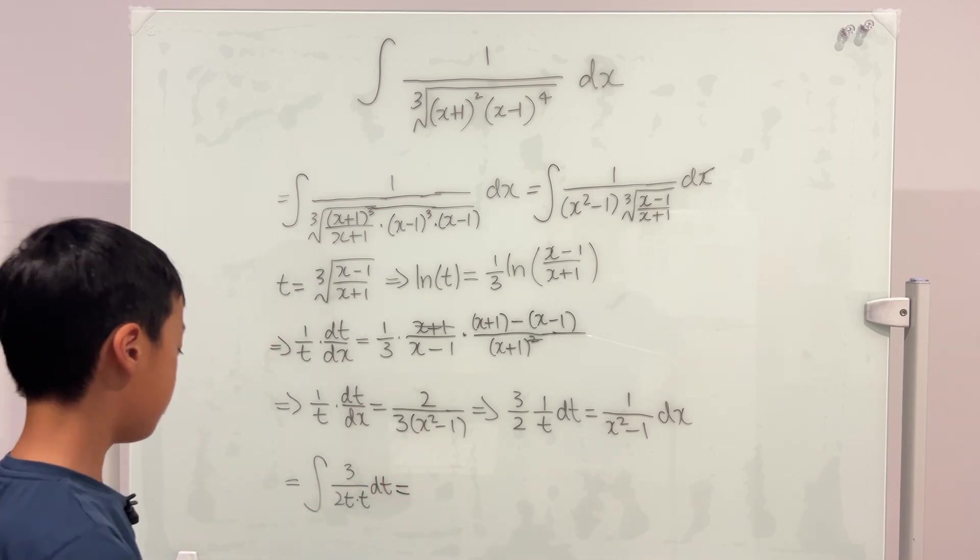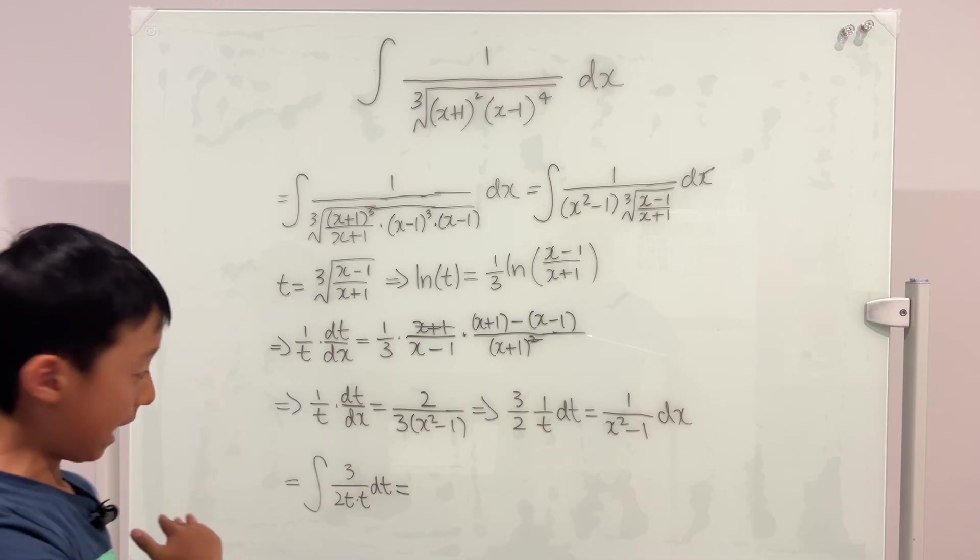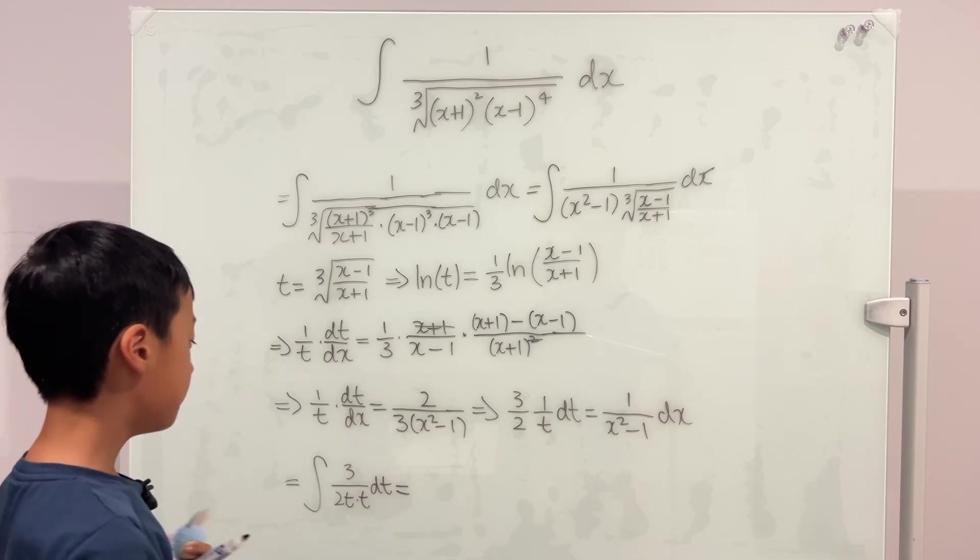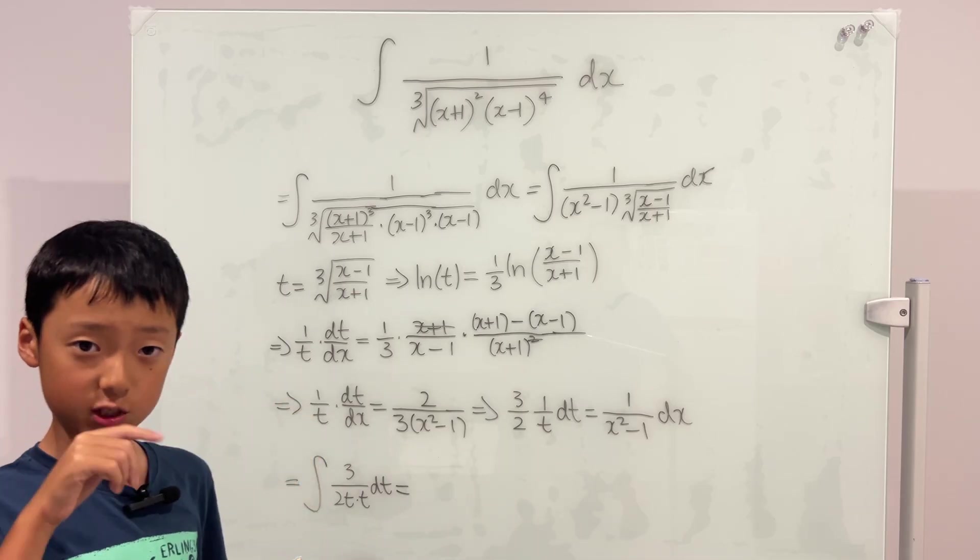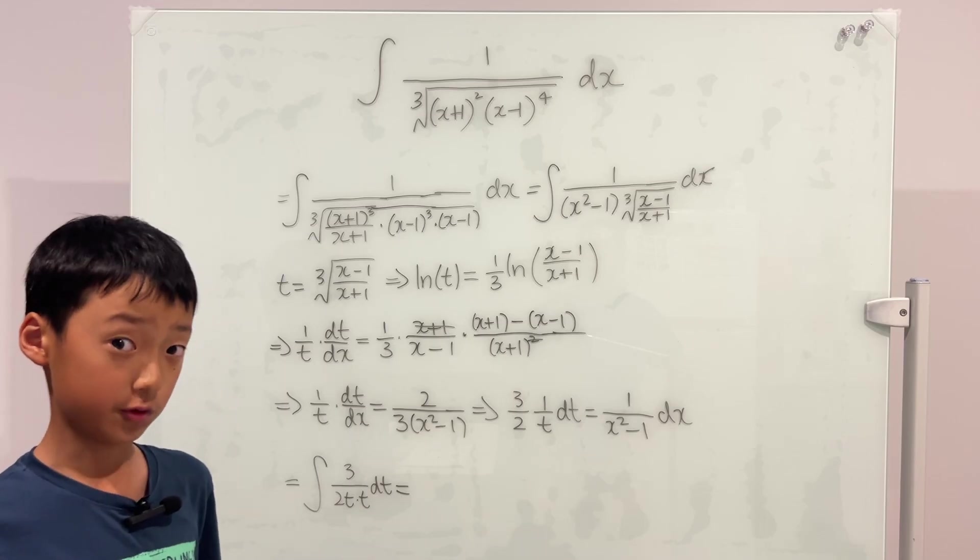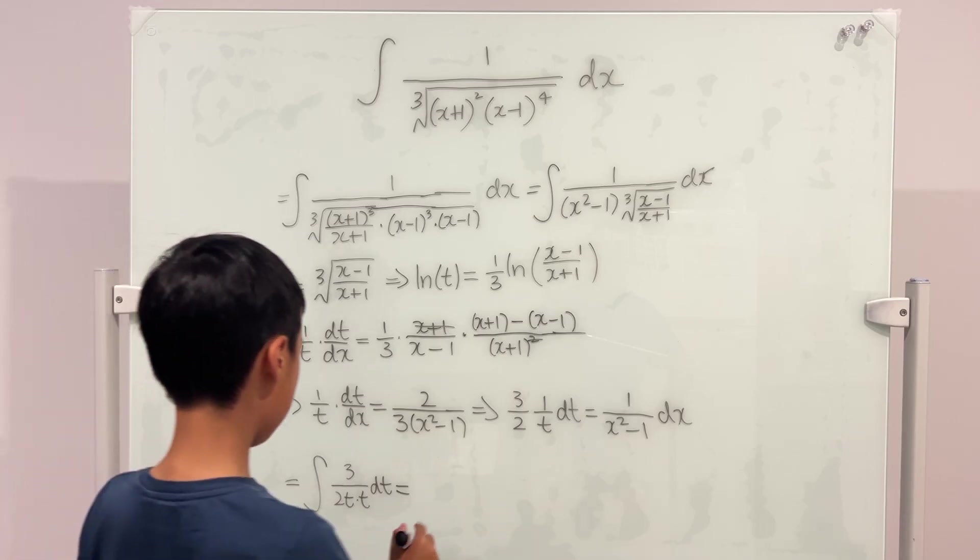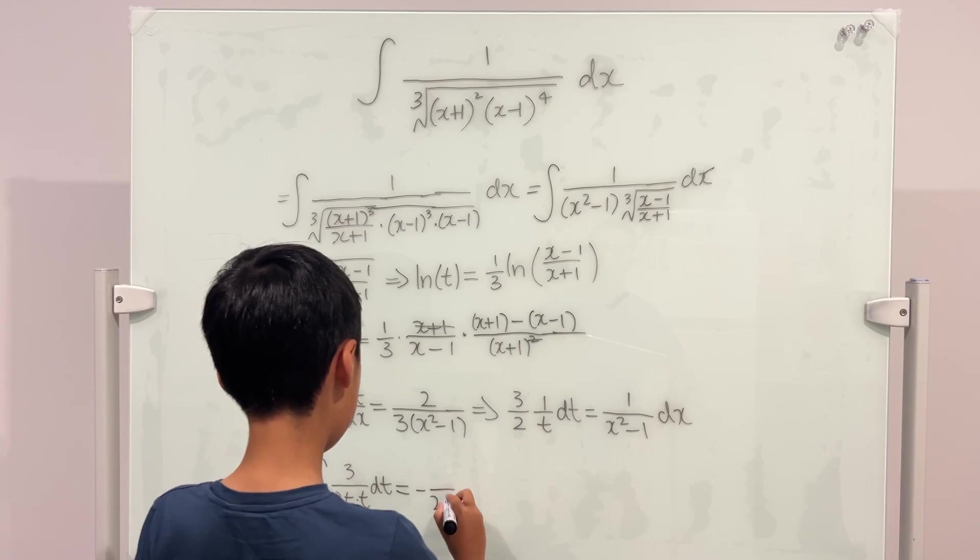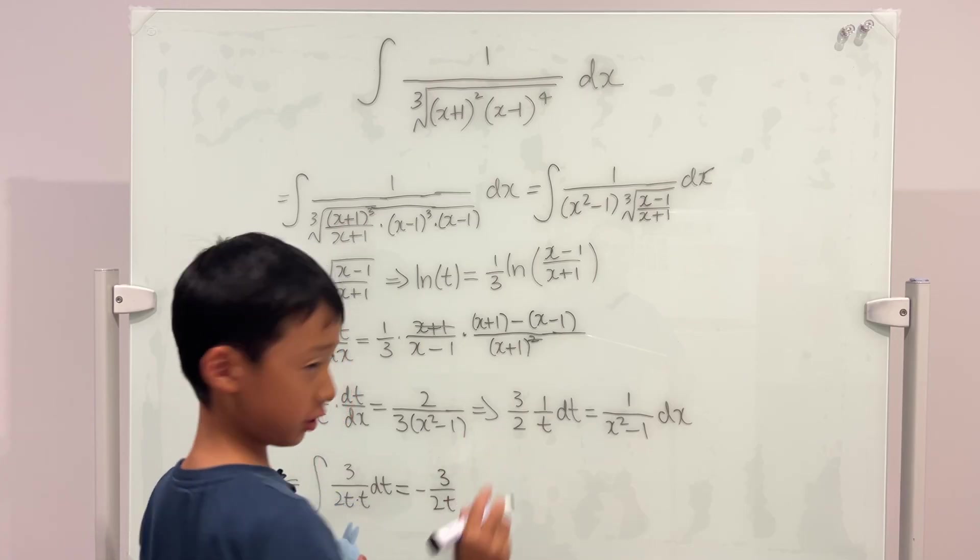This is equal to, if you take out the 3 over 2 outside of the integral in your head, then you'll know that the integral of 1 over t is negative 1 over t. So the answer will be negative, 2t on the bottom and 3 on the top.